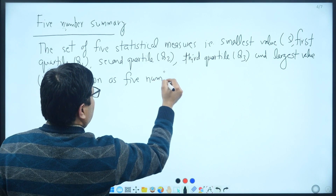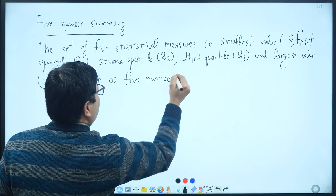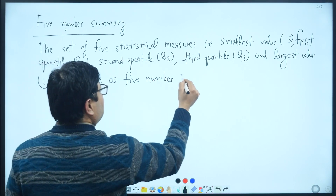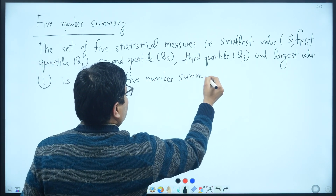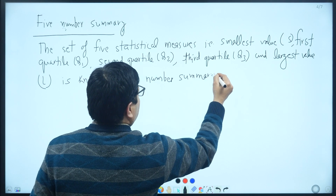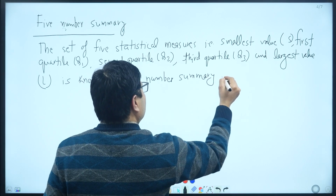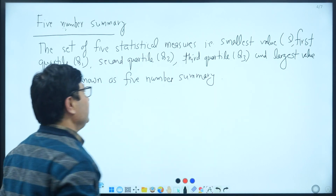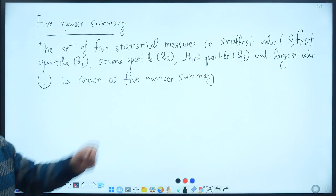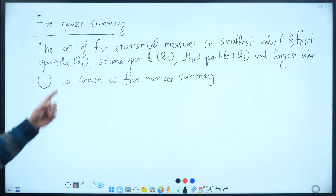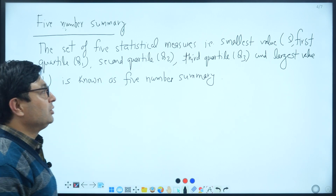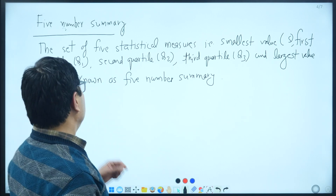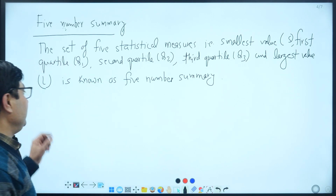It includes 5 statistical measures: the smallest value (S), first quartile (Q1), second quartile (Q2), third quartile (Q3), and largest value (L). This is the five number summary.